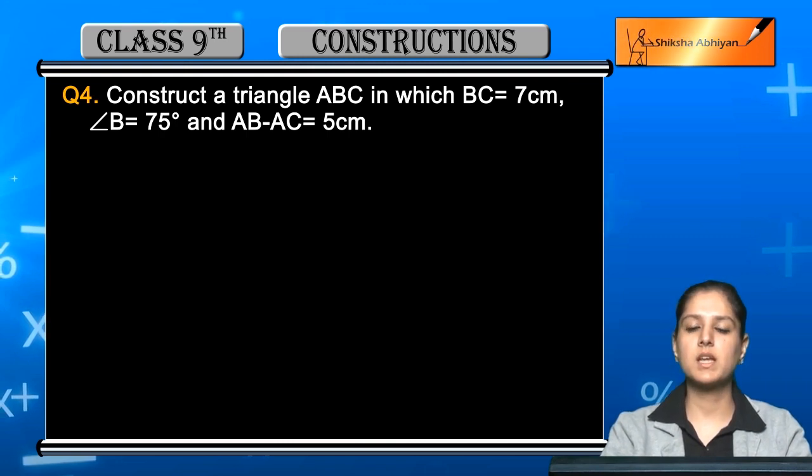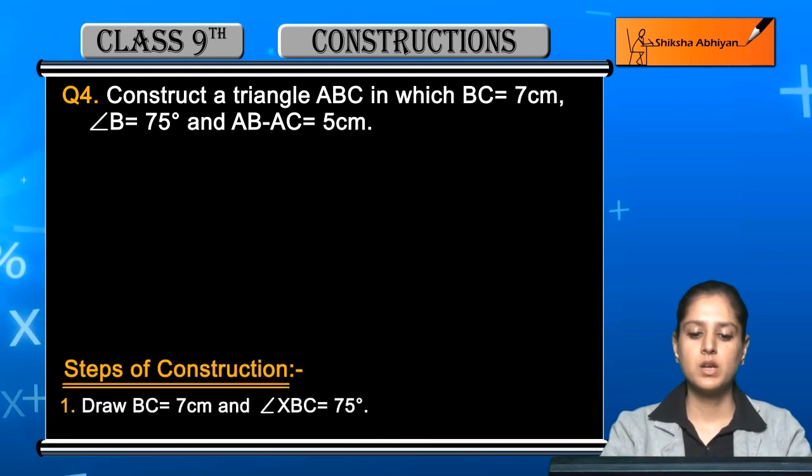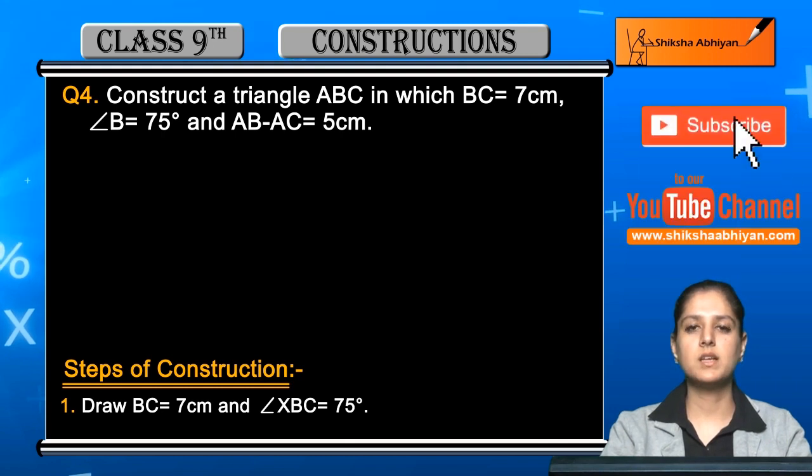In this case, angle B is given and AB is the larger side. Steps of construction: First, draw BC equals 7cm and angle XBC equals 75 degree.